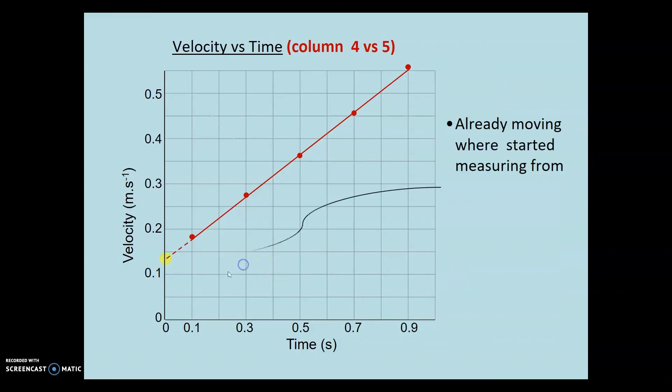What is the meaning of this point? Well, that's where we started measuring from. It wasn't at the very beginning of the tape. So it had a real velocity at point A. And if we extrapolate it back, we get a value of 0.135 meters per second.